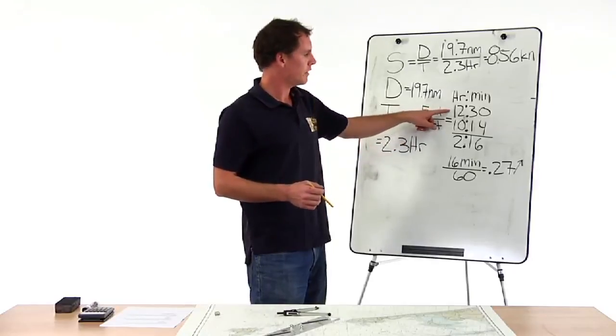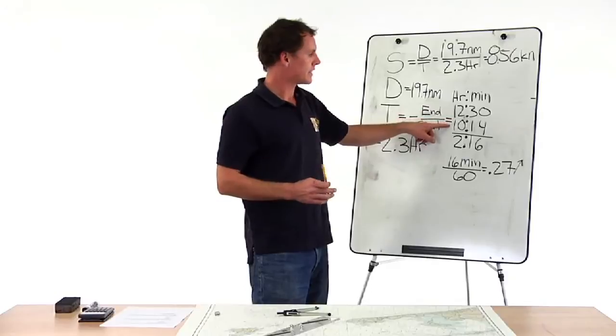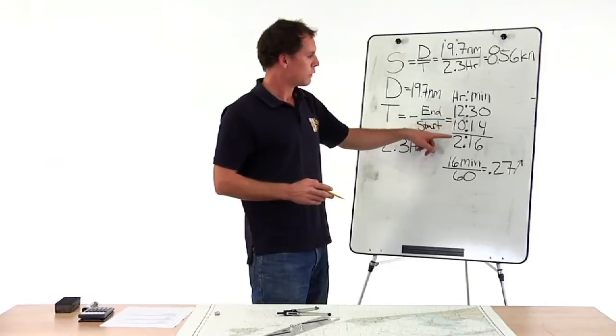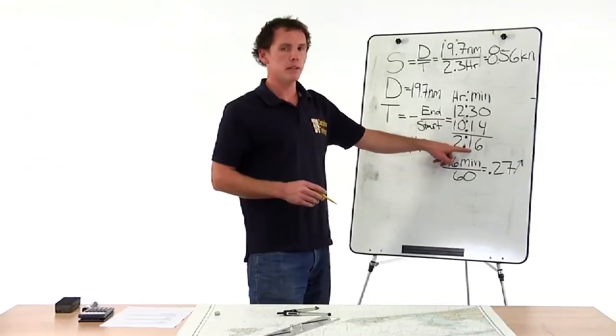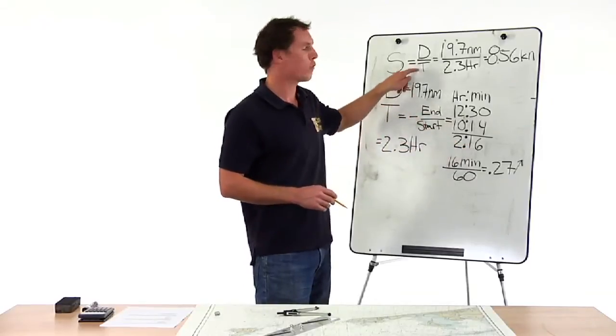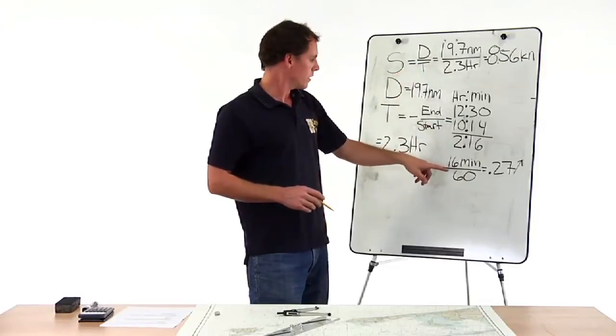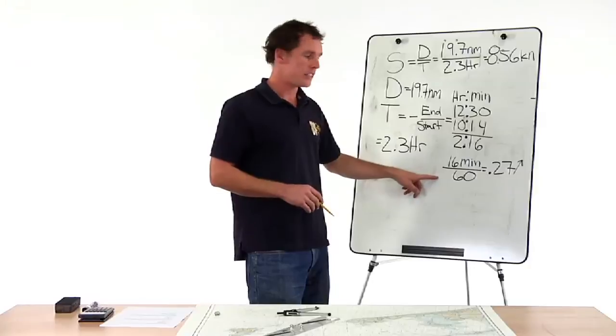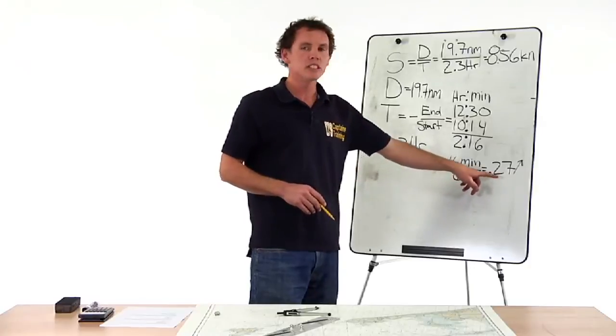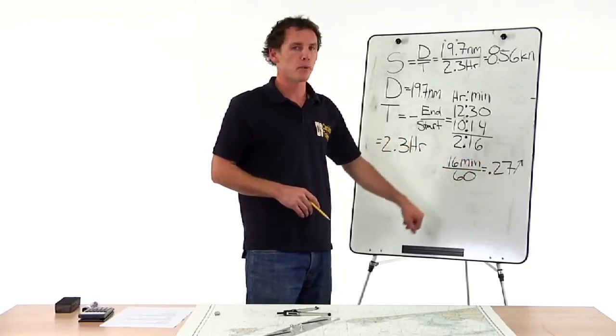So we have twelve thirty minus ten fourteen equals two hours and sixteen minutes. This sixteen minutes has to be converted into hours so we can put it into our formula. Sixteen minutes divided by sixty is point two seven hours. We'll round that up to point three.